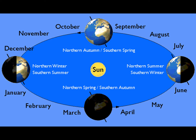Each revolution of the earth around the sun creates different seasons. The seasons depend on the month and the tilting of the earth's axis, which is why different countries experience different seasons — some experience winter, some summer, and others autumn. Take note: the Philippines has only two seasons, which are the wet season and the dry season — also called summer and rainy season.